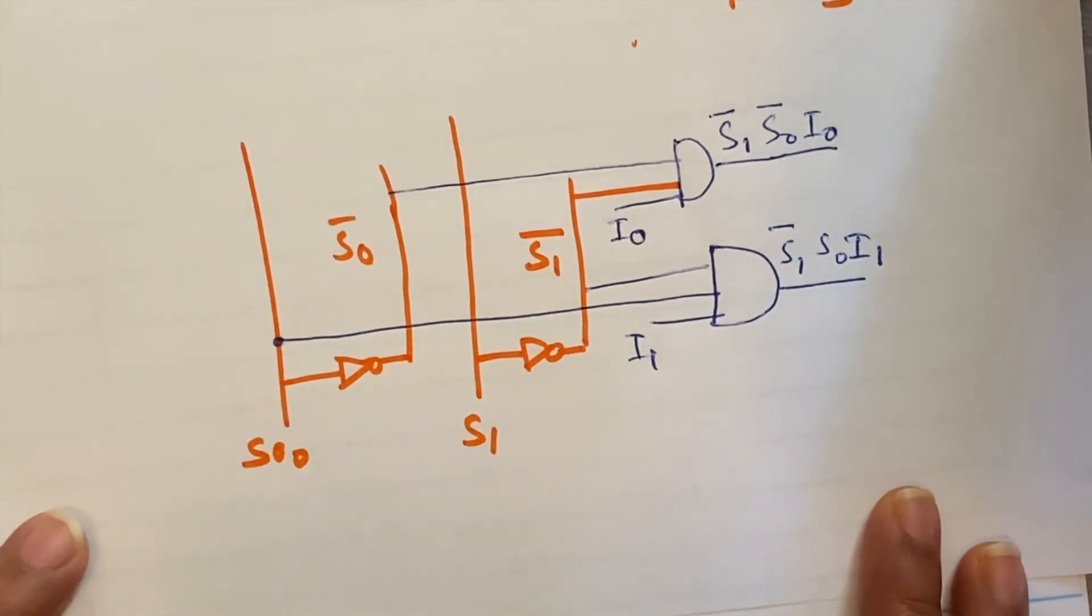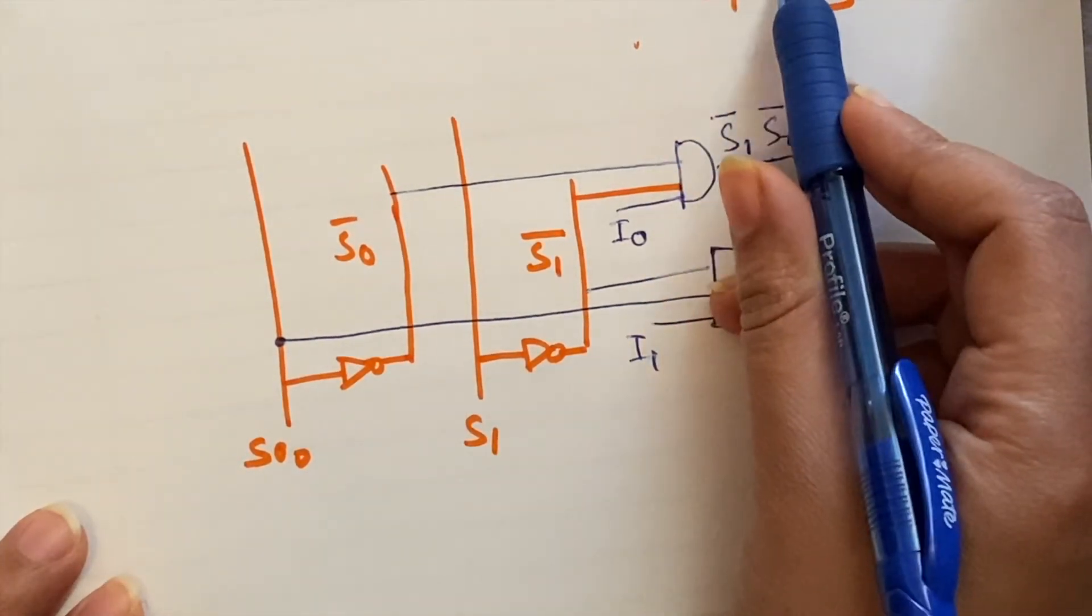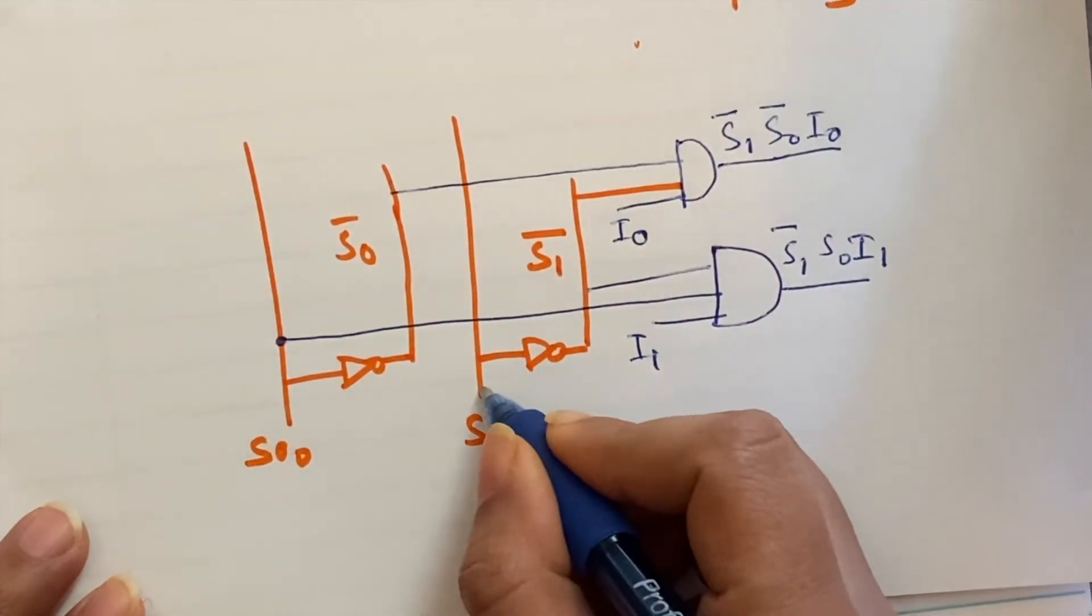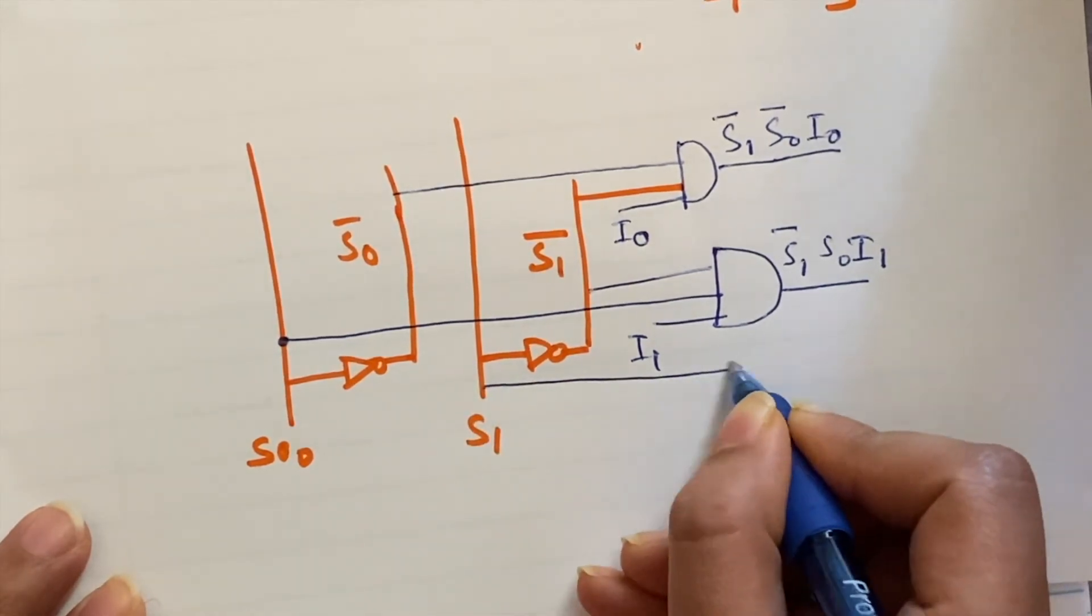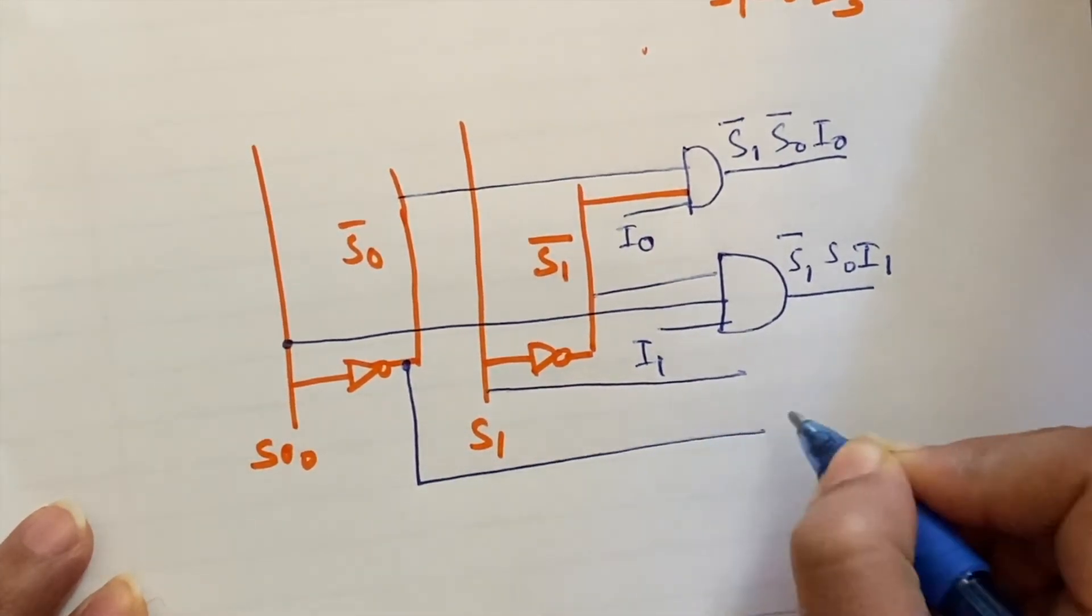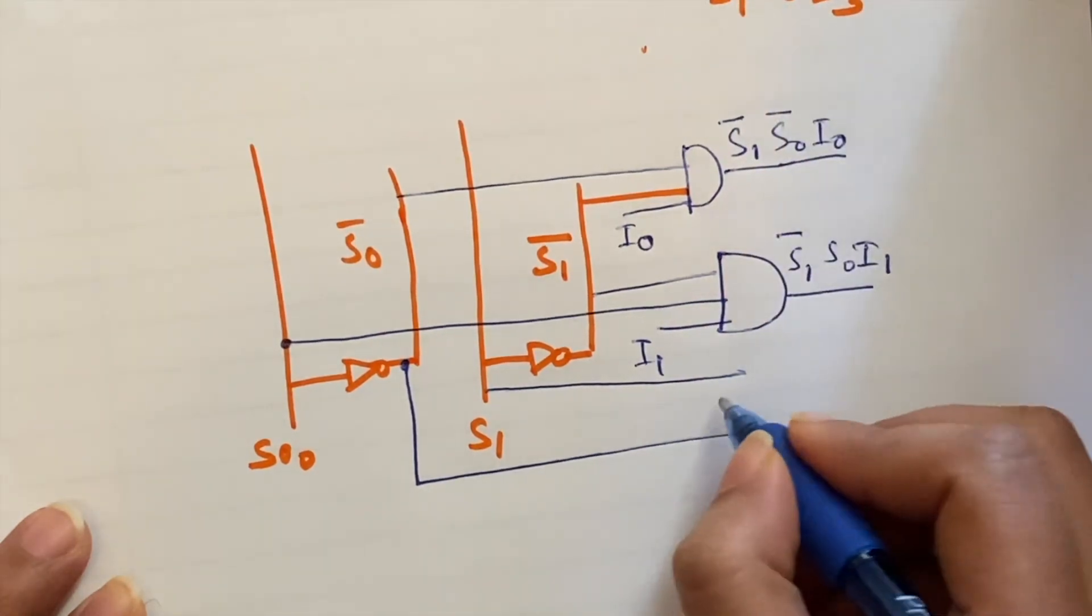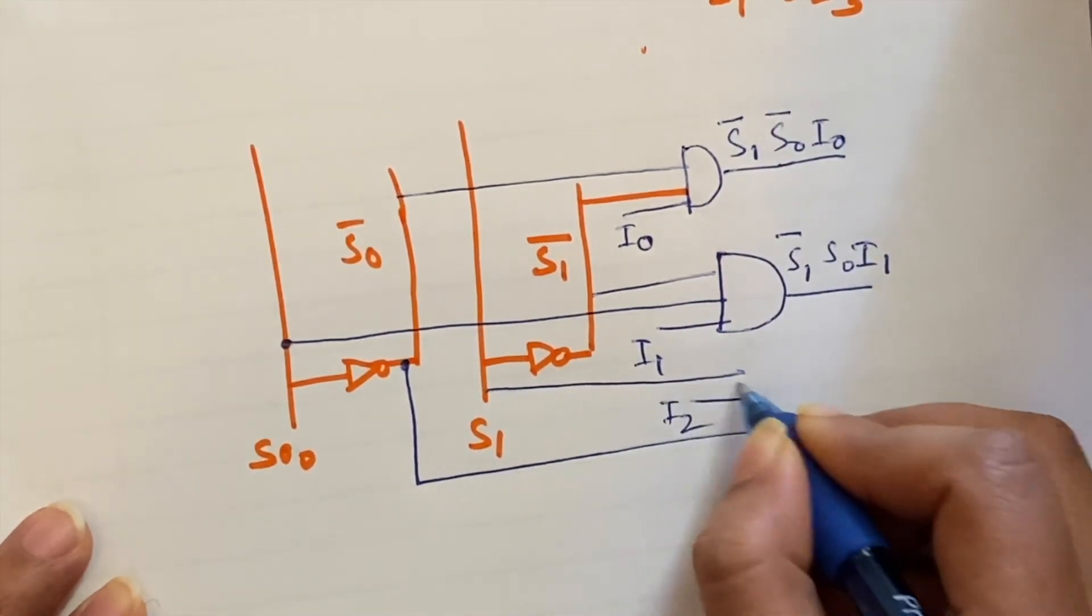Now third term, s1 s0 bar. So this is s1, s0 bar and i2. Let's consider this one, i2.